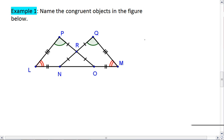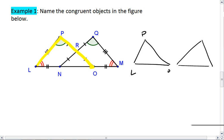Hopefully you were able to pull apart triangle LPO, which is this triangle right here, and triangle NQM, which is that triangle.